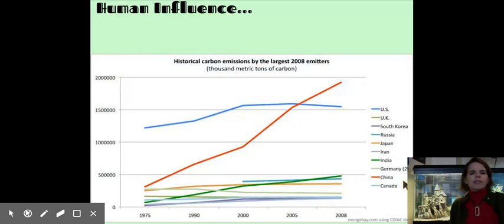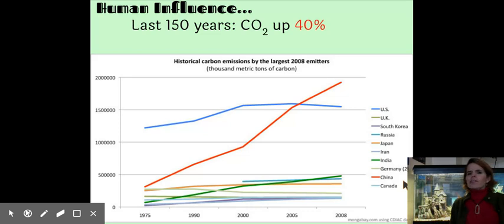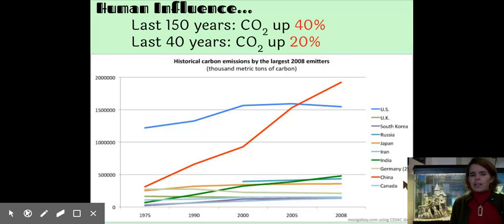All right, and just a few more things about sort of what's been happening with carbon dioxide in our recent history. In the last 150 years, carbon dioxide levels have increased by about 40%. And in just the last 40 years, our carbon dioxide levels have increased 20%. If you take a look at the graph, I think it's interesting. The red line in particular, that red line refers to China. The blue line is the United States. We've been a massive carbon dioxide emitter for several decades now. China within the last decade or so has surpassed us. As they develop, they're releasing more and more carbon dioxide. So we're really the world leaders when it comes, in a bad way, when it comes to carbon dioxide emissions.